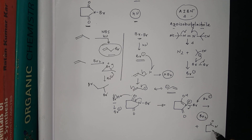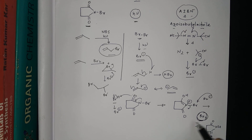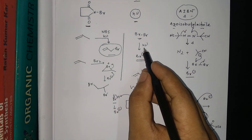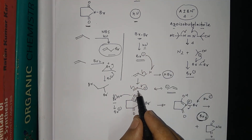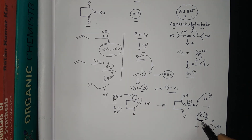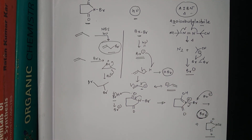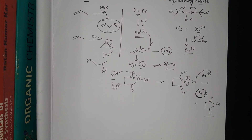This regenerated Br2 undergoes homolytic cleavage — either by hν or by the radical formed previously — producing Br• again. This is how the reaction propagates: initiation generates Br•, which then continues the chain.